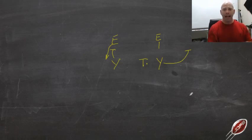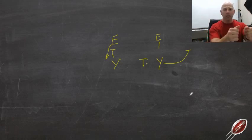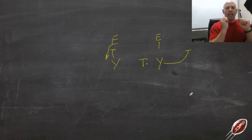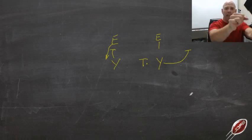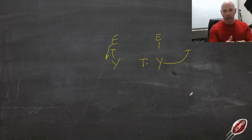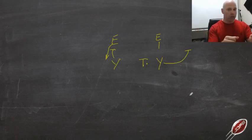He lines up on a tight end with a tackle inside of him. He strikes the tight end — the tight end down blocks, boom, squeeze. He strikes the tight end — the tight end base blocks, boom, extend and rip to the inside. He goes to strike the tight end — the tight end arc releases. Visual key. What's the visual key doing? Three things the visual key can do.